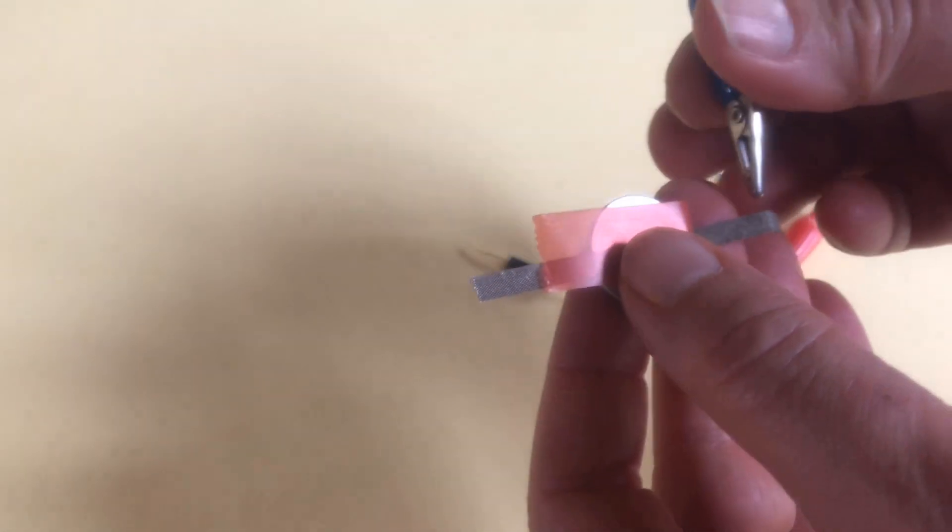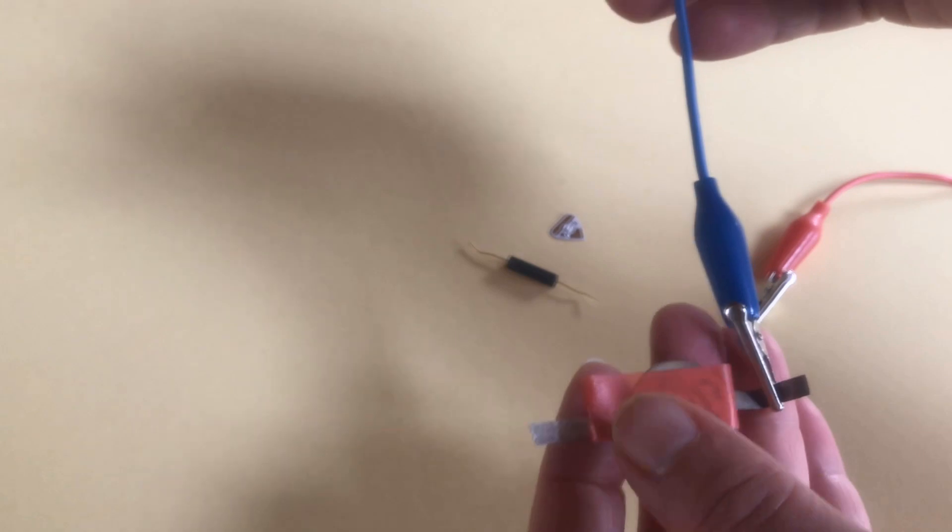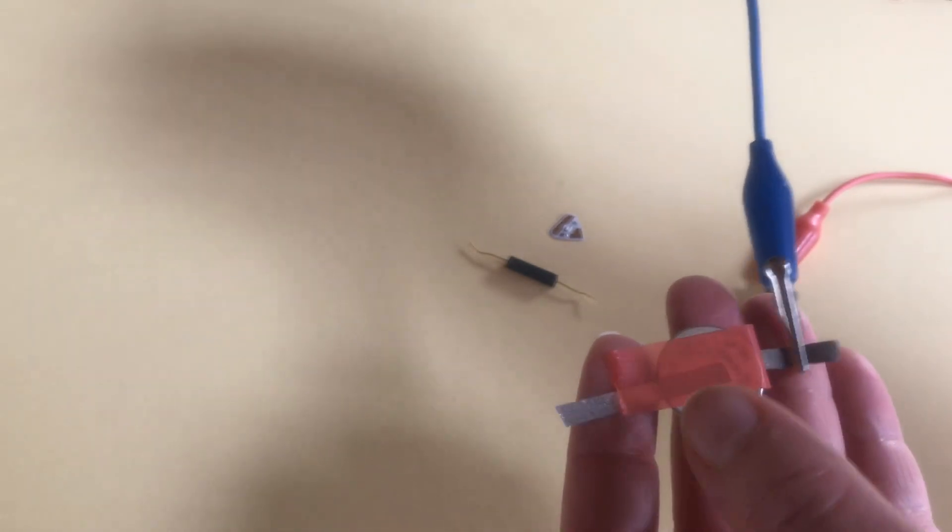Then I'm going to use a blue alligator clip. I'm using blue because we use blue to symbolize the negative trace. I'm going to connect the blue alligator clip to the circuit tape that's touching the negative side of the battery.